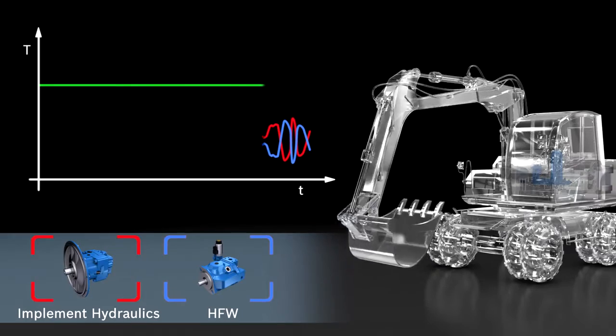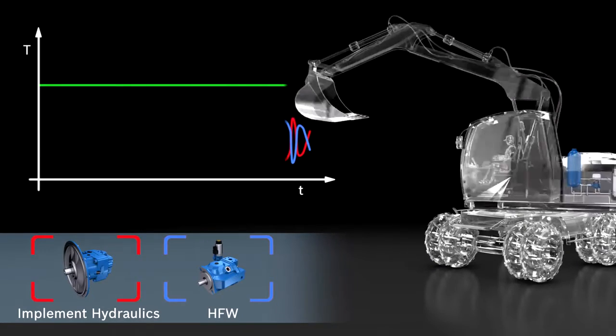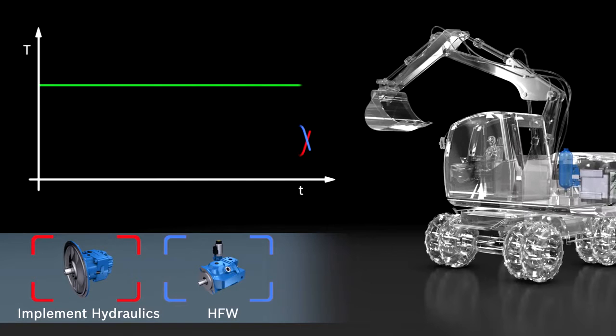The hydraulic flywheel thus evens out the power required from the combustion engine and keeps it ideally constant.